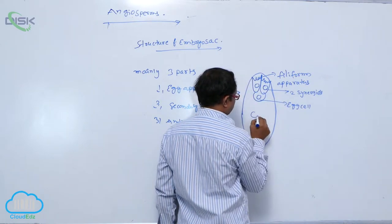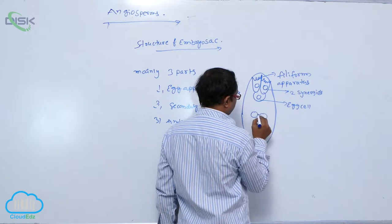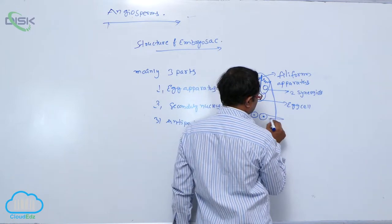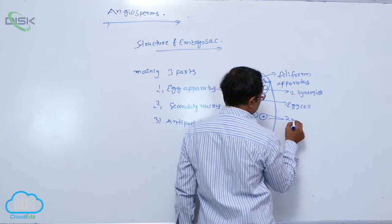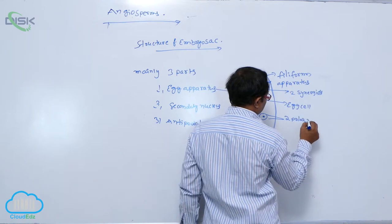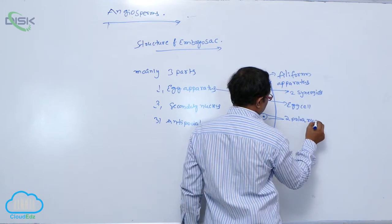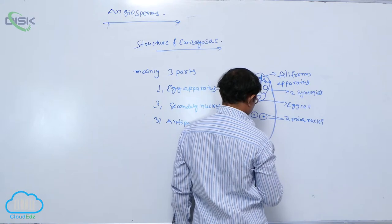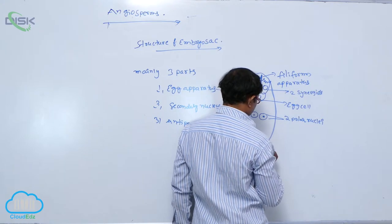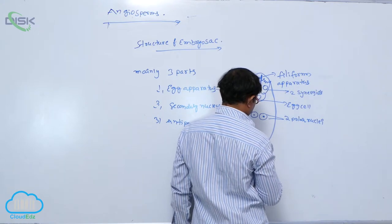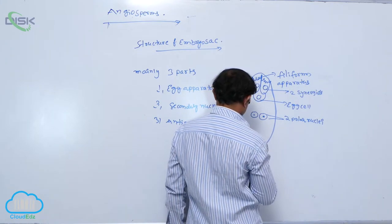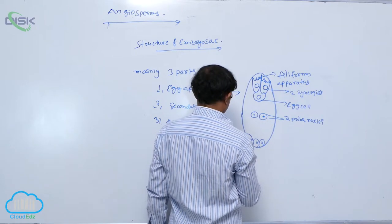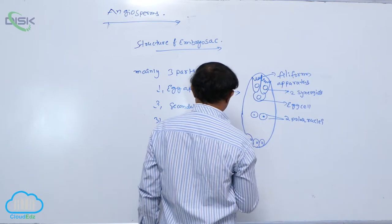After that, these are the two polar nuclei. These are the smallest cells. They are known as the antipodal cells. Three antipodal cells.